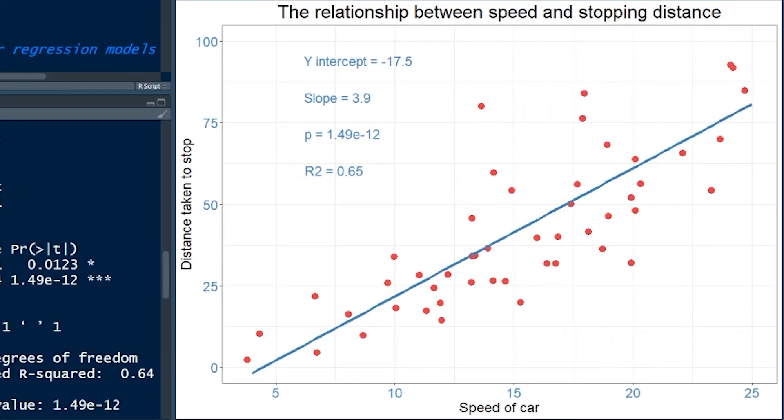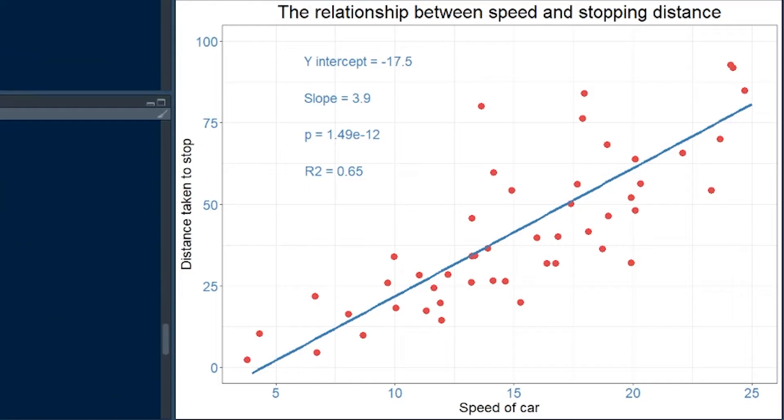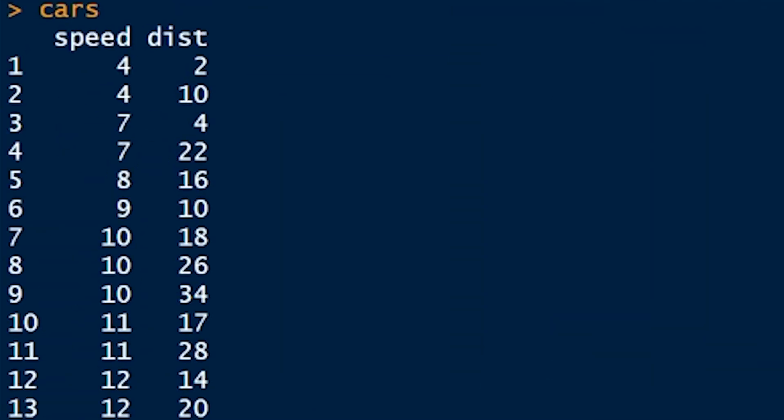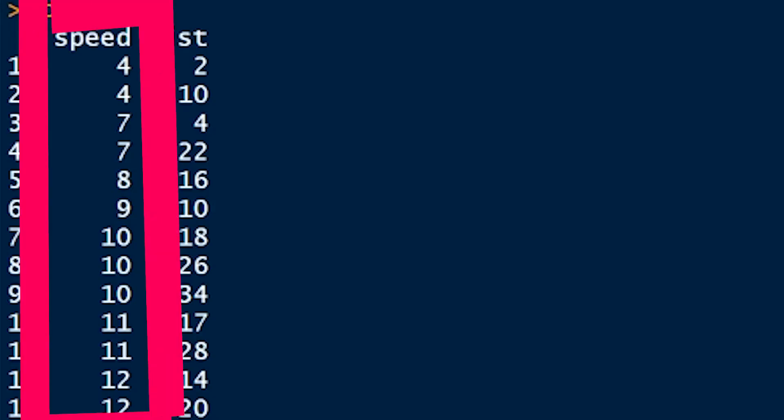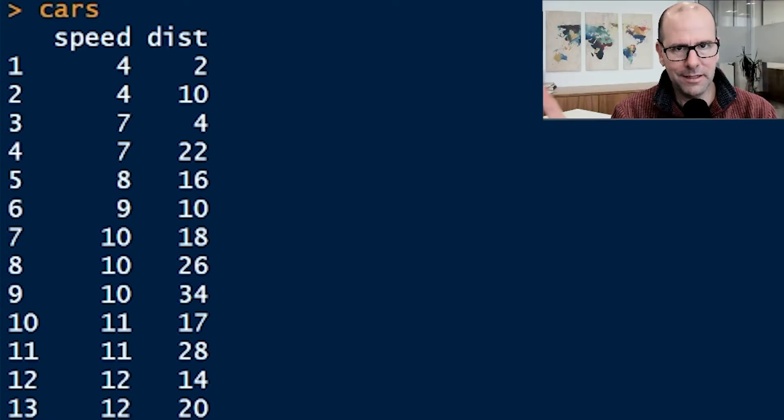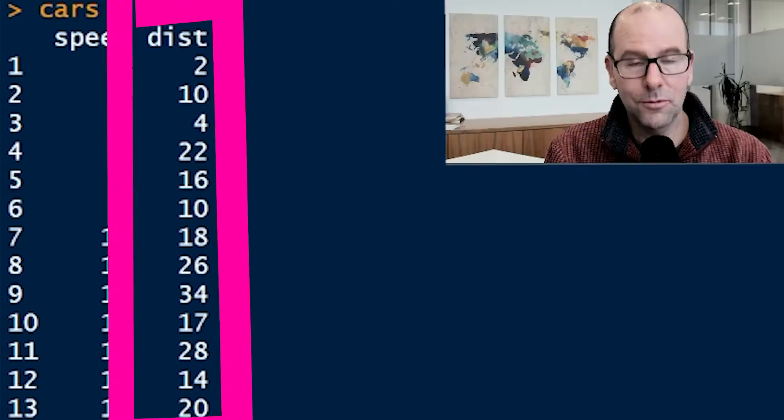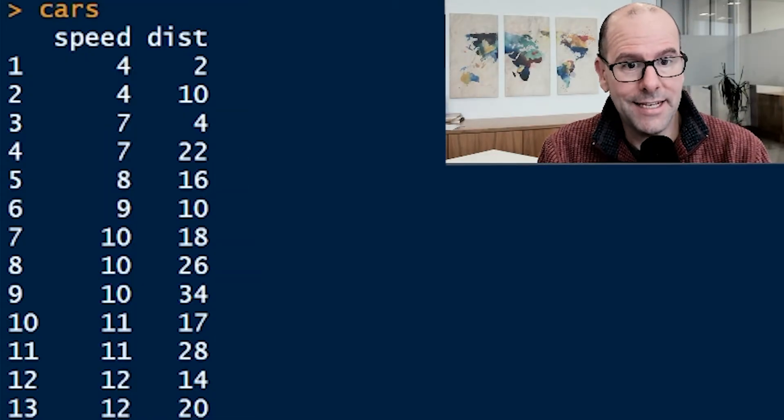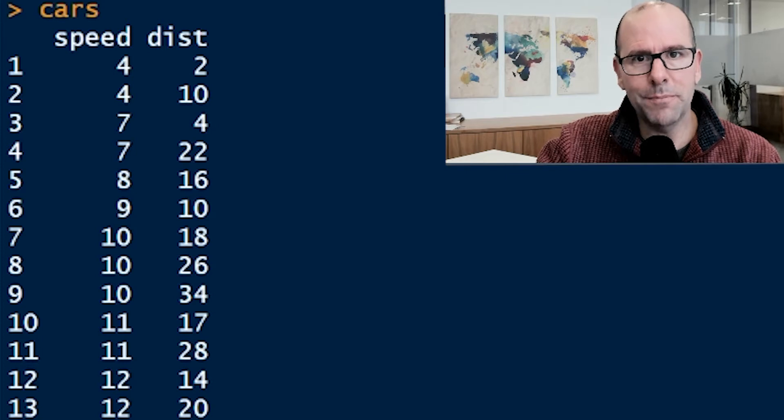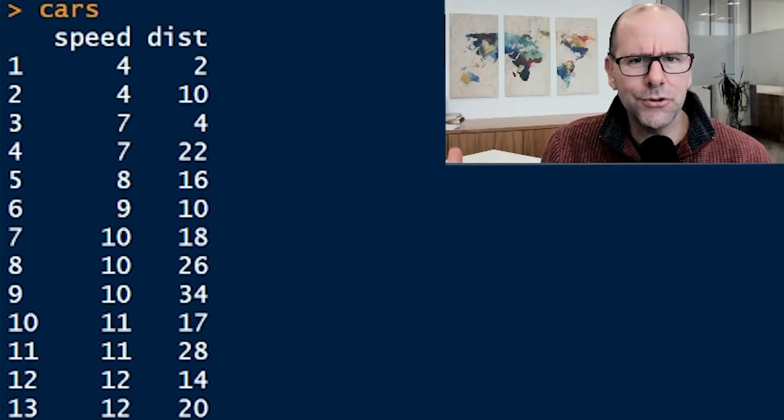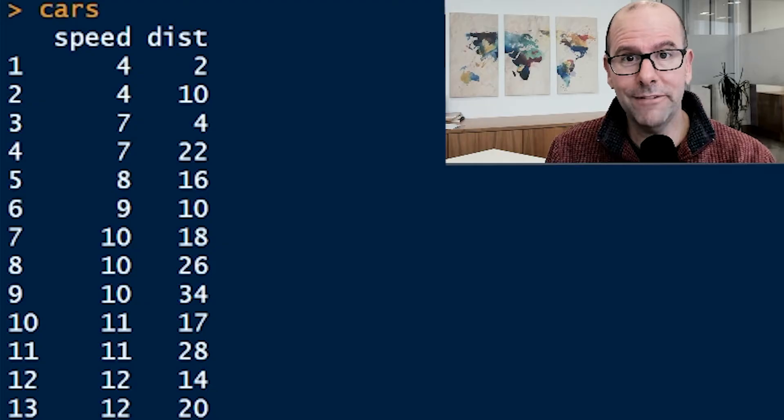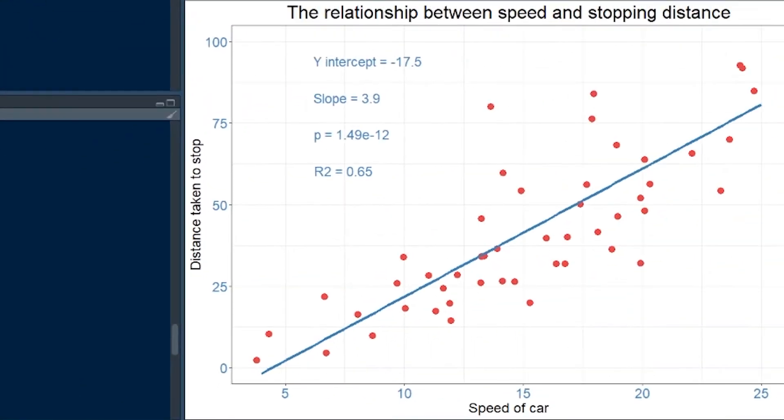We've got a model with data on the speed of cars and the distance it takes for the car to stop. Let's go to the data set called cars. It's got speed of cars and distance to stop. The question is: is it the case that the faster you travel, the longer it'll take you to stop? Intuitively we all agree yes, but let's see if that's borne out by the data.